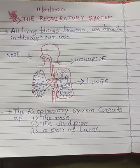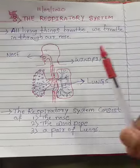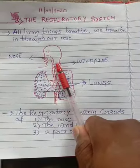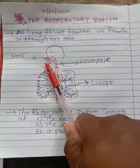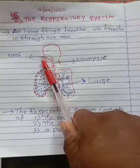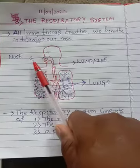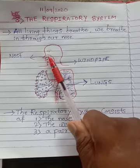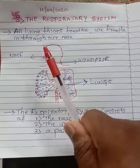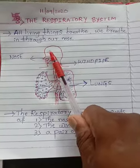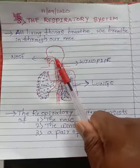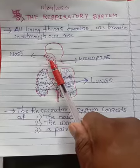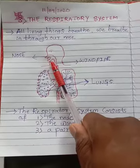Did you know why we breathe through our nose? Why do we breathe through the nose and not through the mouth? It is very simple. The nose has fine hairs which trap dust particles and very tiny insects. So always breathe through your nose and not through your mouth.